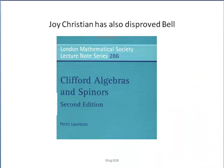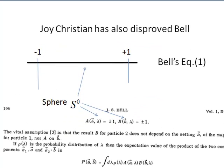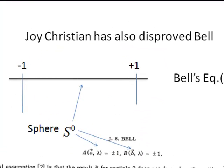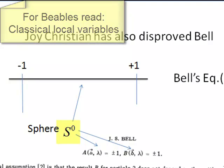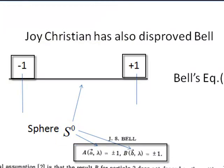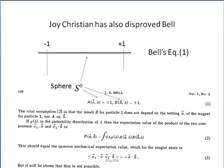Now, Clifford algebra is also called geometric algebra and is concerned with the algebra in different geometric spaces. However, the point I want to make is that Bell's beables are geometrically a unit sphere of zero dimension, denoted by S^0. That is just two points, +1 and -1, on a line. That is all Bell uses.